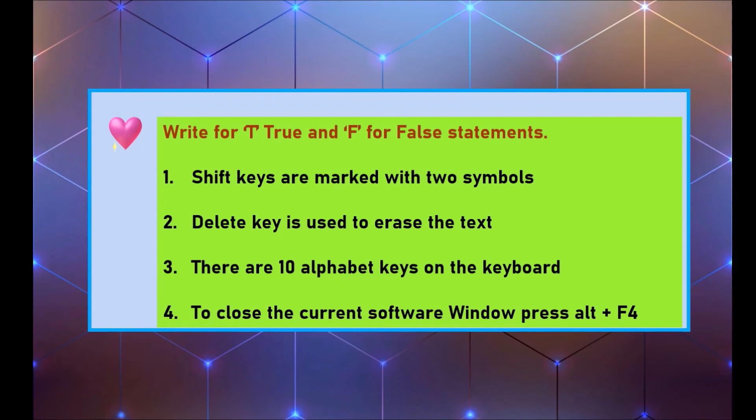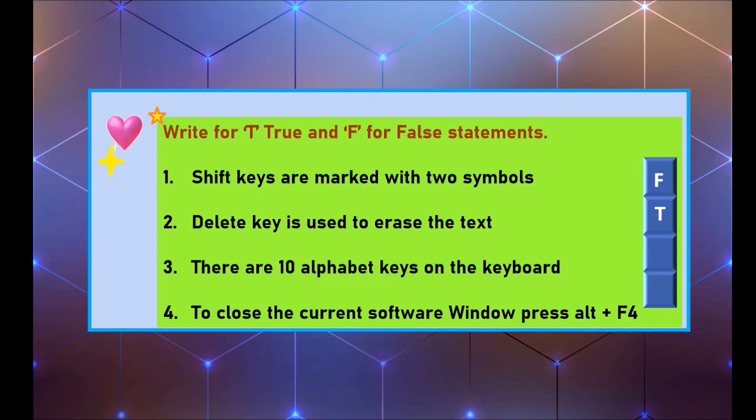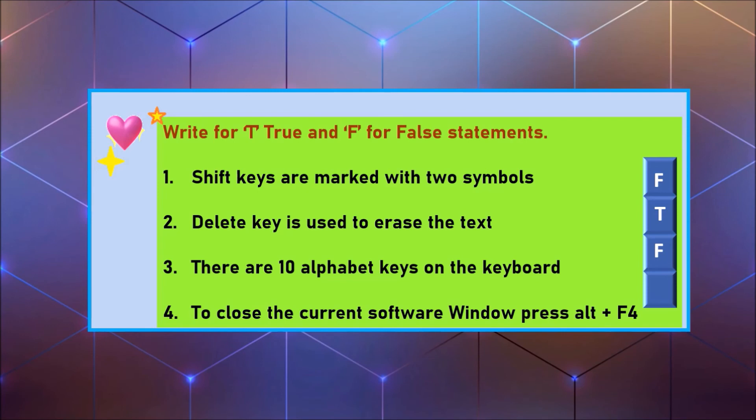True or False: Shift keys are marked with two symbols — False. The Delete key is used to erase text — True. There are 10 alphabet keys on the keyboard — False. To close the current software window, press Alt+F4 — True.